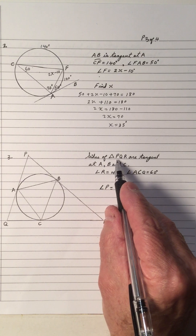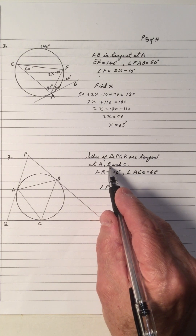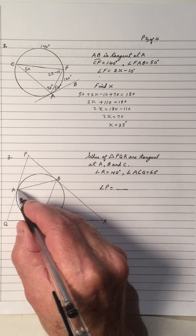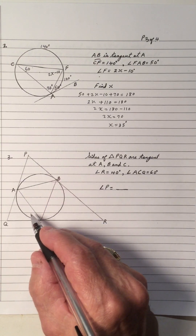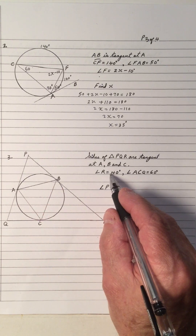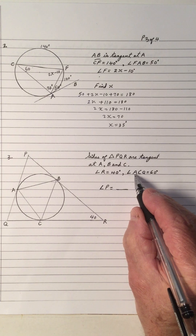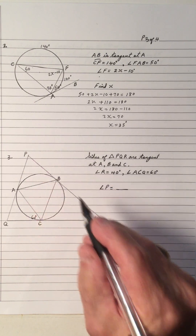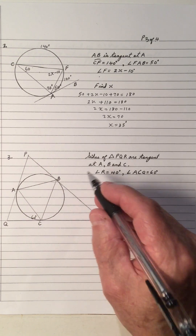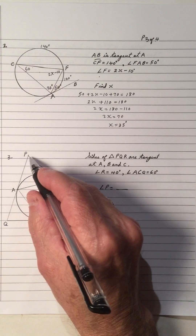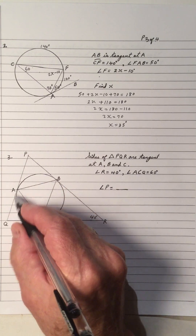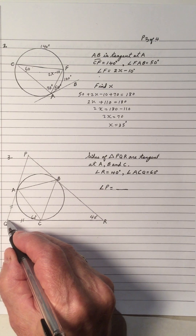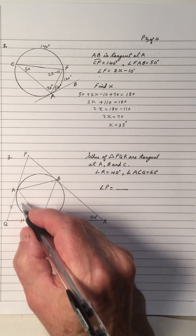Problem 3: The sides of triangle PQR are tangent at A, B, and C, so A, B, and C are the points of tangency and the sides of the triangle are tangent to the circle. Angle R is 40 degrees, and angle ACQ is 60 degrees. We want to find angle P. Since QC equals QA — two tangents drawn from a common point are equal — these two angles are equal by ITT (isosceles triangle theorem), so both equal 60 degrees.